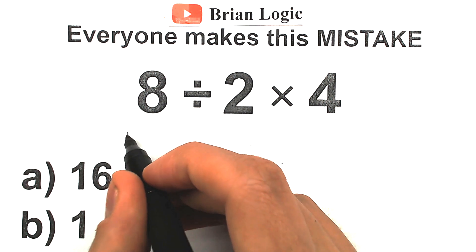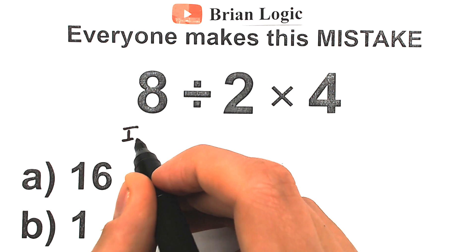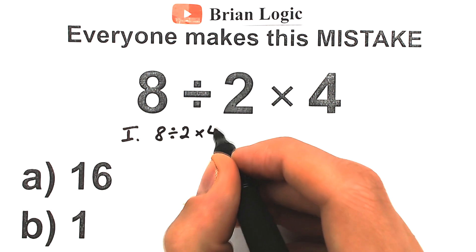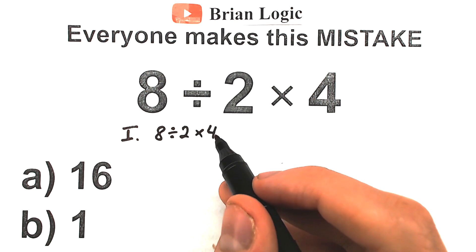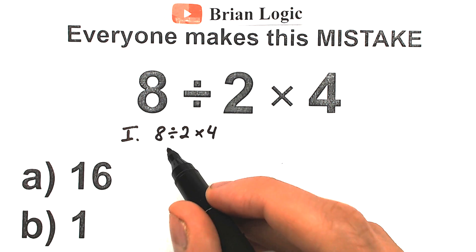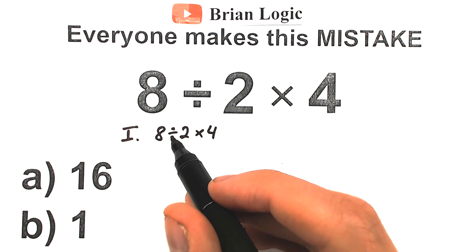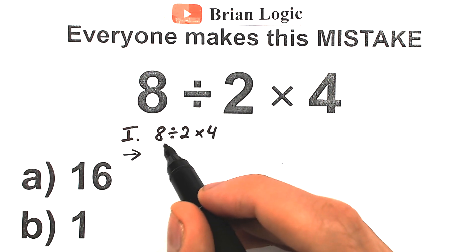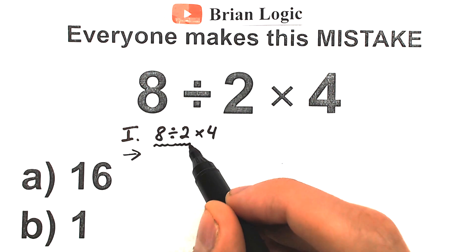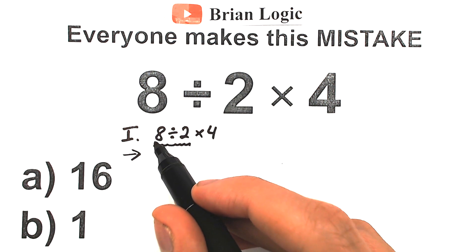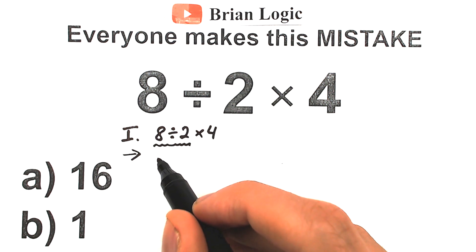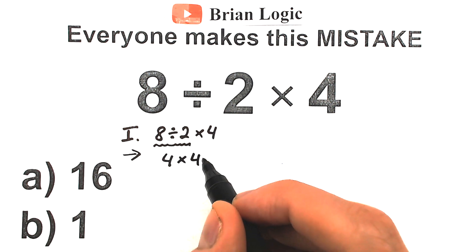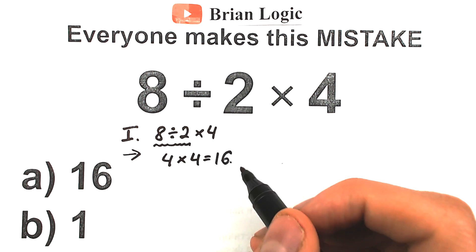There are two interpretations. The first interpretation: we have 8 divided by 2 and times 4. According to the order of operations, division and multiplication have the same precedence, so the correct order is to evaluate from left to right. The first sign from left to right is division, so we divide first. 8 divided by 2 equals 4, and 4 times 4 equals 16. This is the correct answer of 16.